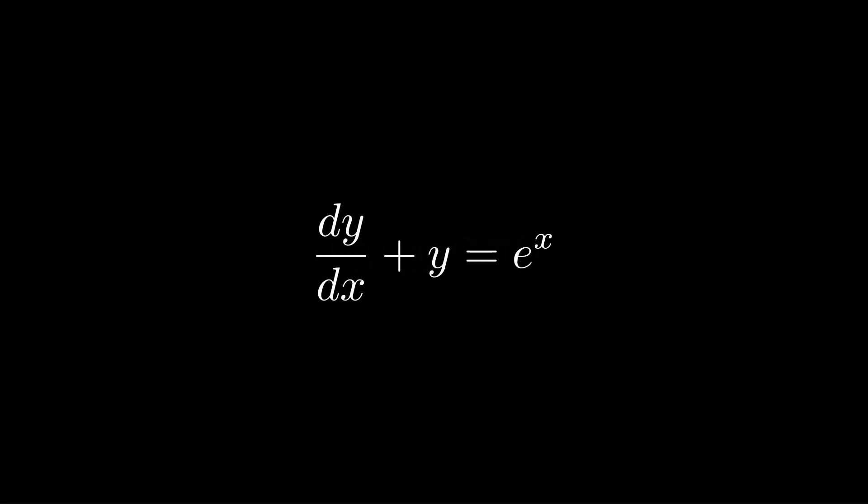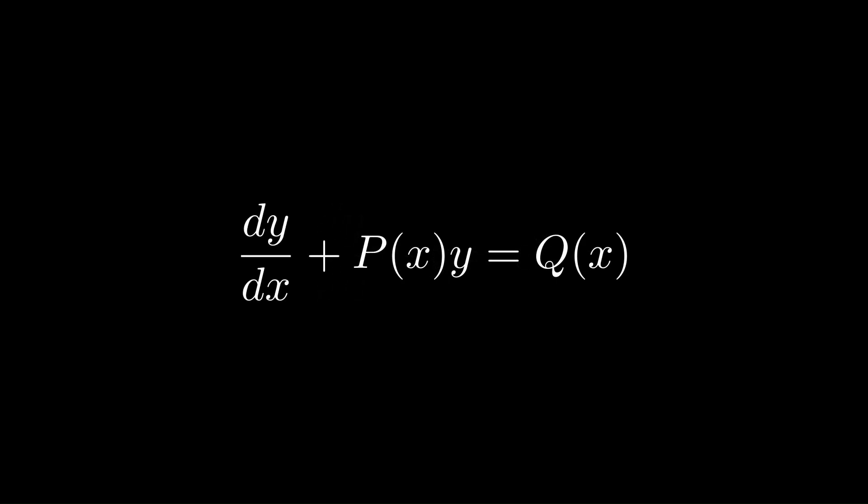Next is the linear ODE. This one is more recognizable because it comes in a specific form: dy/dx plus a function of x times y equals a function of x. We call these p and q.